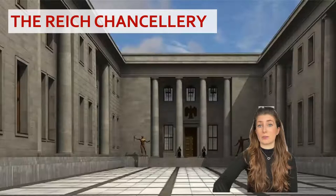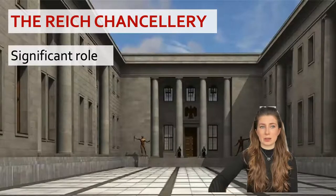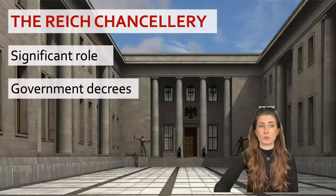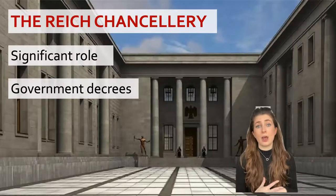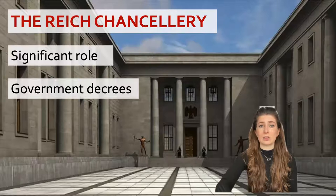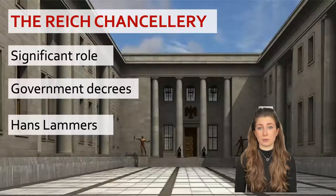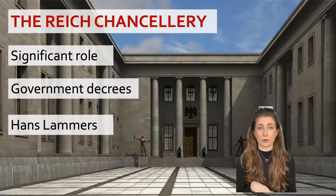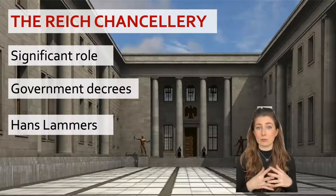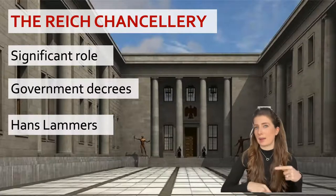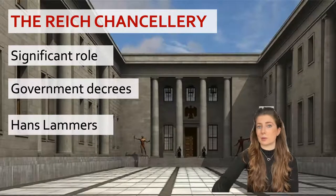The Reich Chancellery was far more important — the central administrative body greatly expanded its role. After the Enabling Act, most laws and decrees were drawn up by Chancellery officials. It coordinated departmental responses to new legislation, issued government decrees, and dealt with increasing paperwork, including letters to Hitler. Hans Lammers was the head of this organisation, and in his role he had huge influence and control over what information flowed to and from Hitler, giving him really significant influence over Nazi policy.